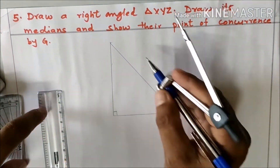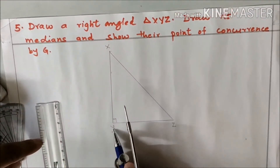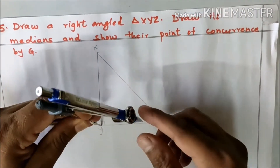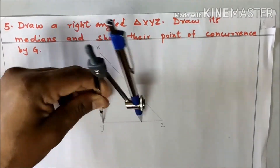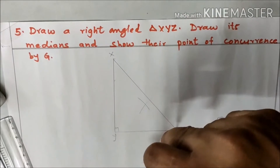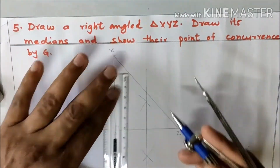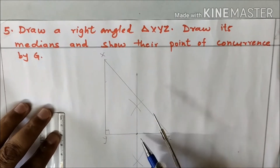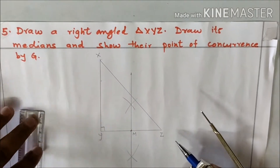We got a right-angle triangle; we'll name it XYZ. Now we need to draw the medians of this triangle. First we will find the midpoint of side YZ. Take the compass length more than half of YZ, make one arc up and down. Then place it on Z, make arc up and down, and join the point of intersection of both arcs. This line is the bisector of YZ, dividing it into equal parts. Let this midpoint be M.